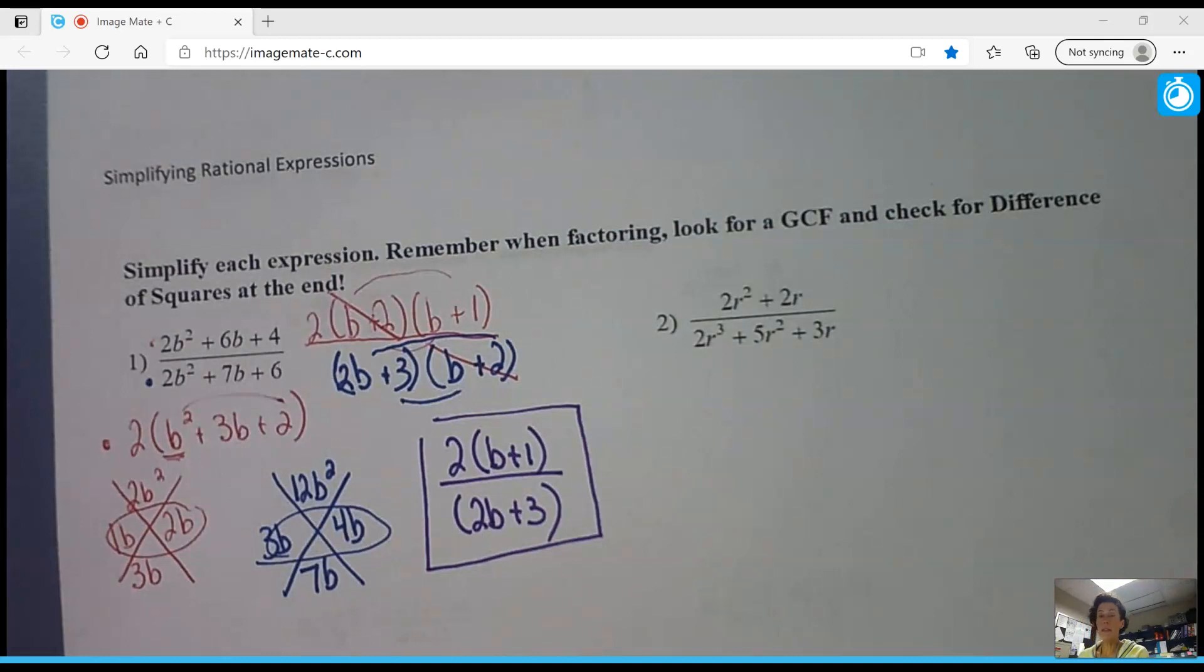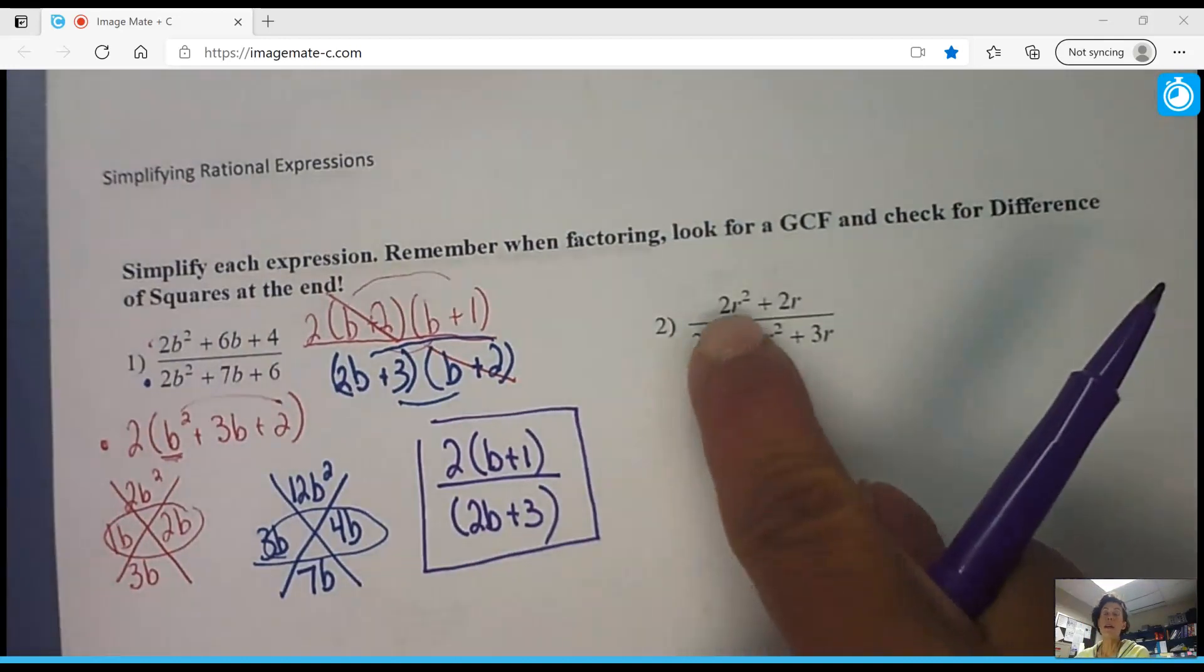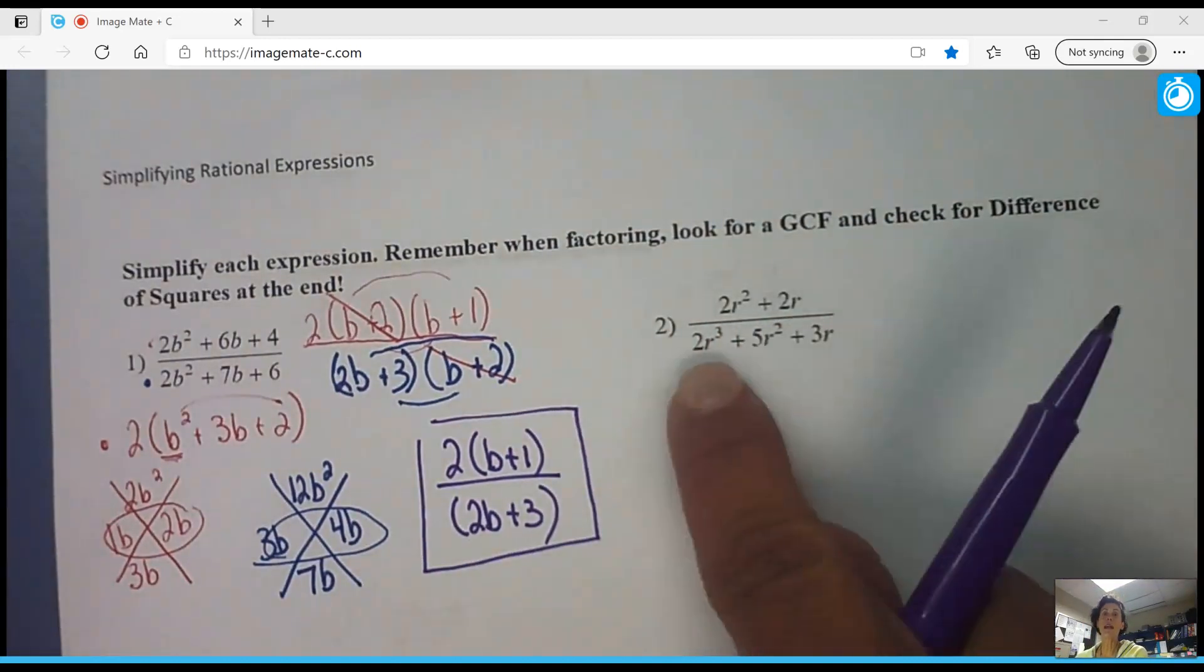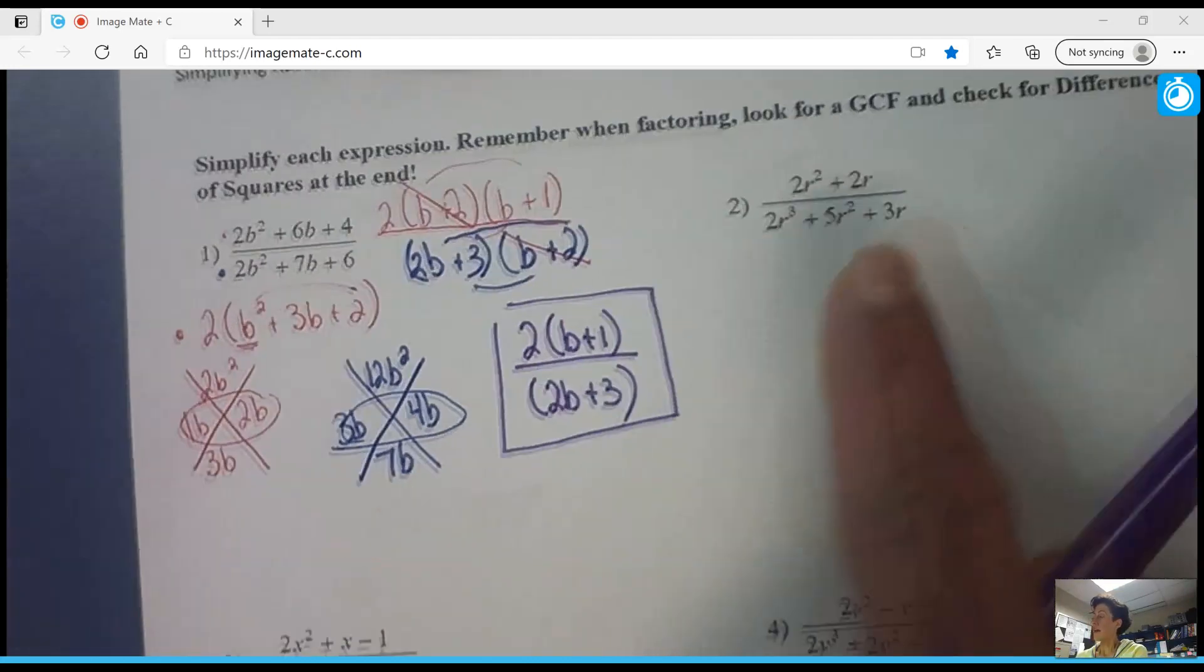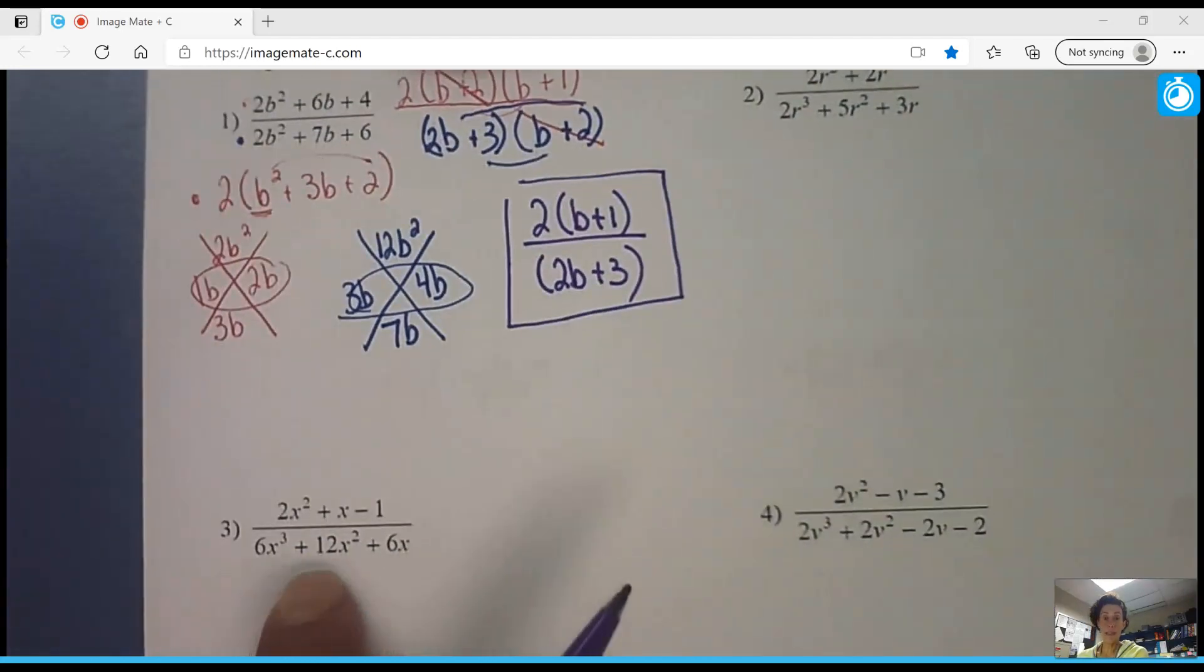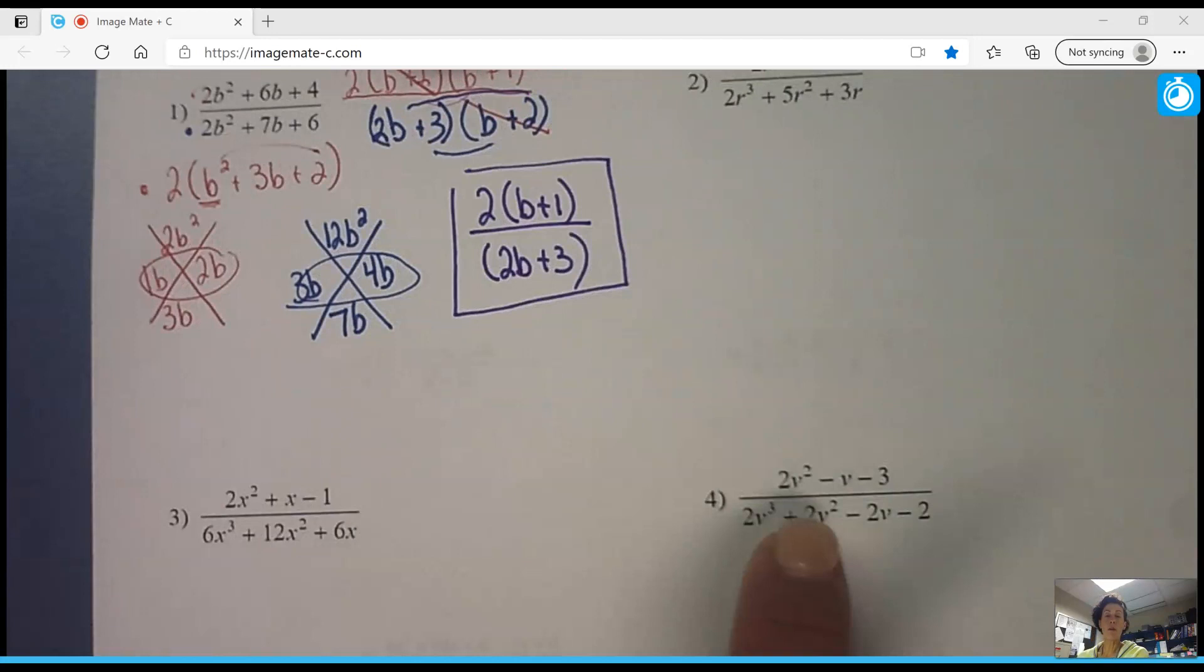Just pointing out some things: on number 2, there is a GCF in your numerator and in your denominator. On number 3, there is a GCF in the denominator. And on number 4, there's a GCF in the denominator. So make sure you are taking out the GCF. And then when you're done, just double check, is there a difference of squares? Because right now, none of the problems start with two terms, so there won't be a difference of squares.